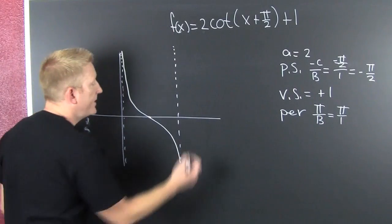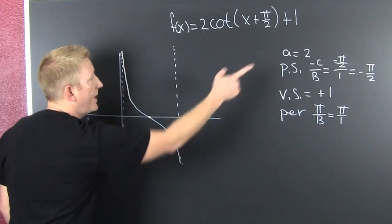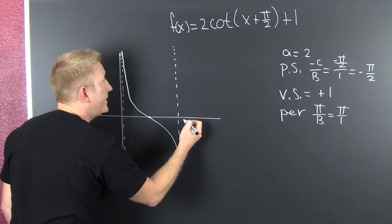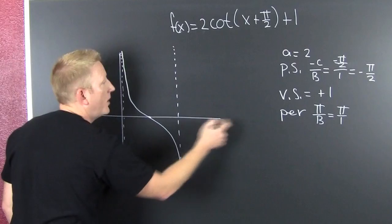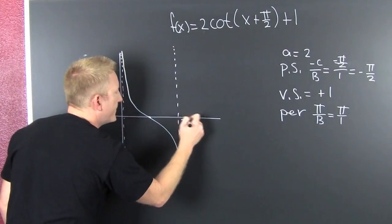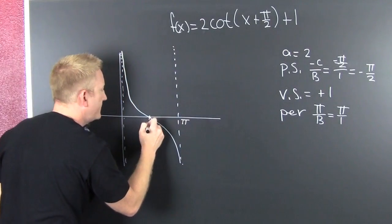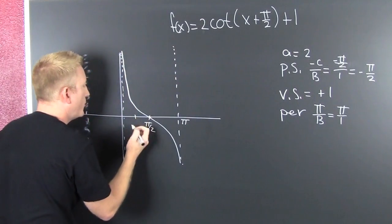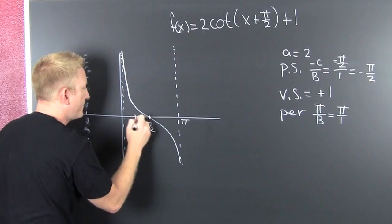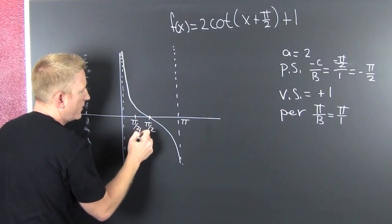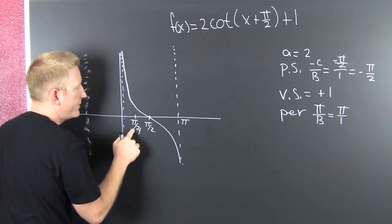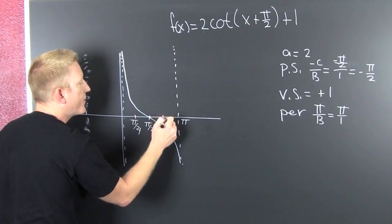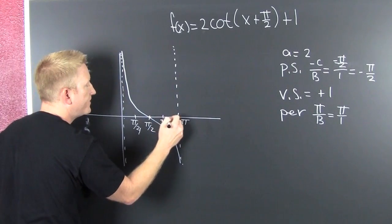And then I label it. This is the period out there — pie, half pie, quarter pie. One pi over four, two pies over four, three pies over four.